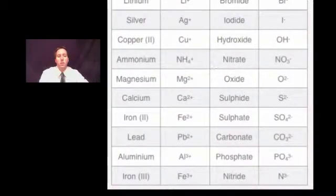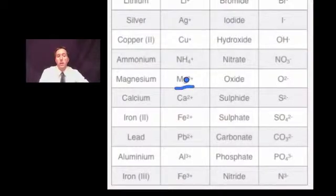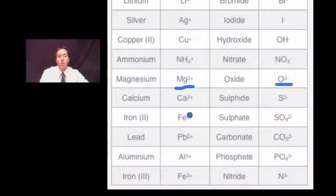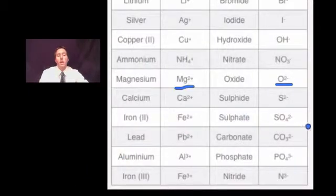Bromide and iodide going down the table also have a charge of just positive one. Magnesium has a charge of 2+, oxygen has a charge of 2-. Going down the table further, lead has two positives, aluminium has three positives, and iron can be either iron(II) with a charge of 2+ or iron(III) with a charge of 3+.